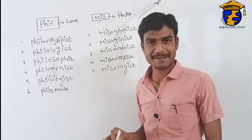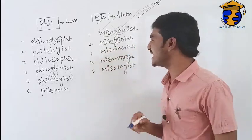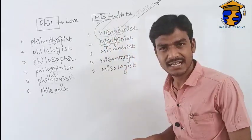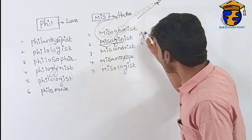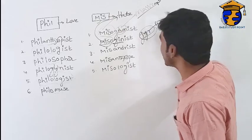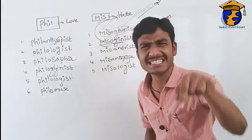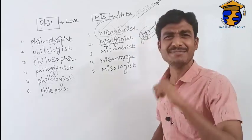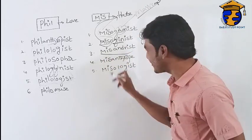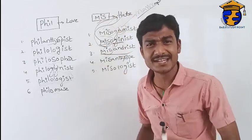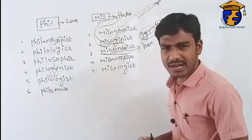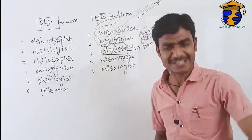The next word is 'misogynist.' The prefix 'mis' means hate, and 'gyne' means women. A person who hates women is called a misogynist. Next is 'misandrist.' 'Mis' means hate and 'andros' means man. A person who hates men is called a misandrist.